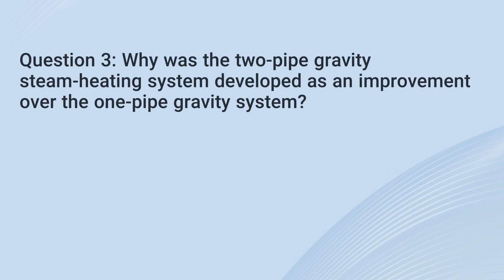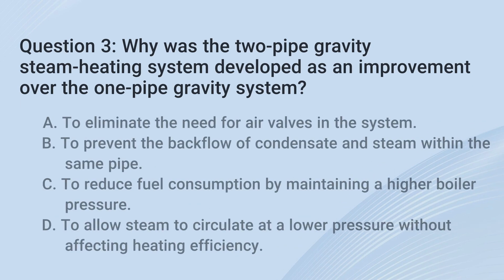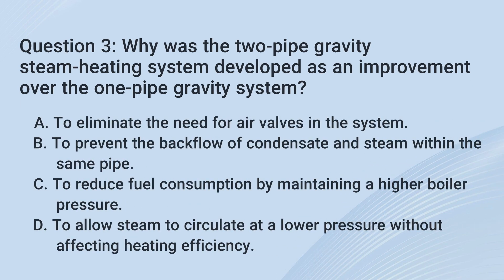Question 3. Why was the two-pipe gravity steam heating system developed as an improvement over the one-pipe gravity system? A. To eliminate the need for air valves in the system. B. To prevent the backflow of condensate and steam within the same pipe.